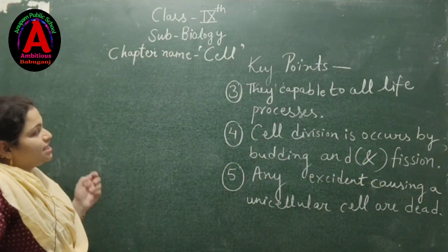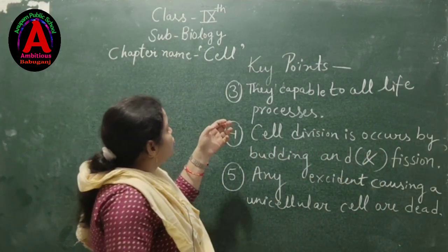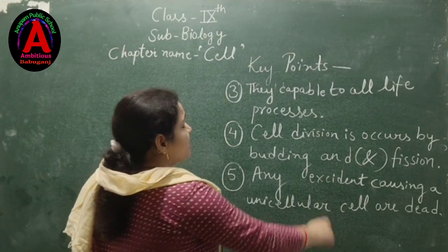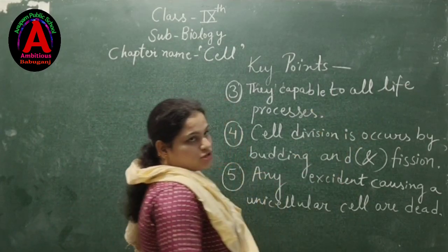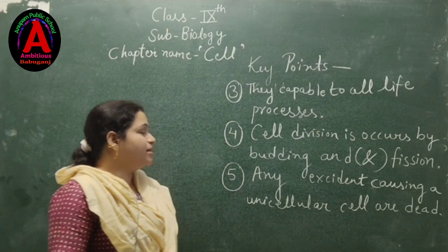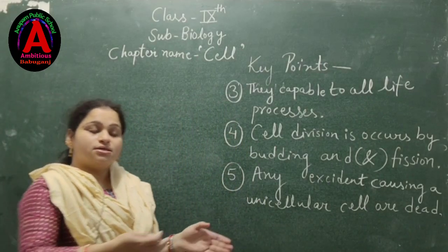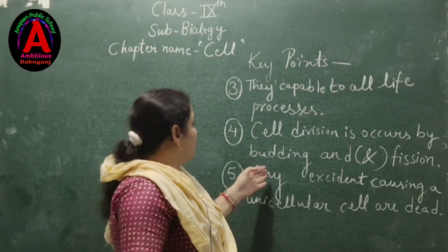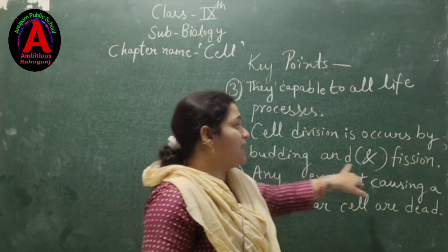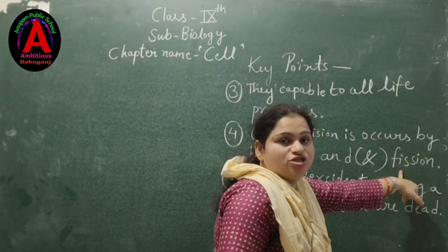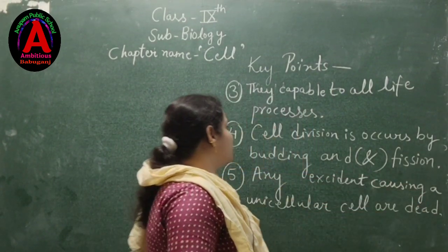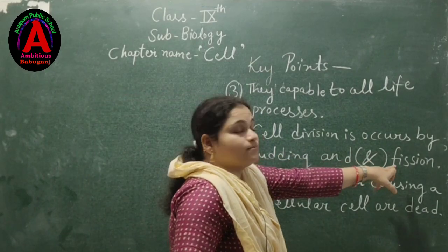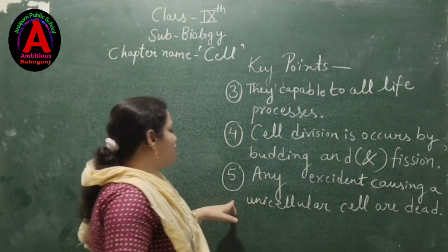Unicellular organisms perform all life processes through their single cell. They reproduce and renew cells by budding and fission. Through these processes, a new cell is generated.